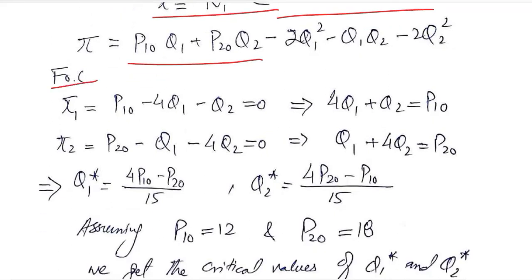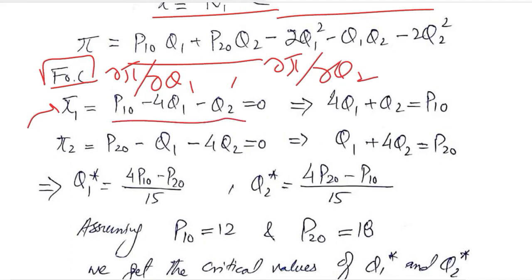After this, once we calculate the first order conditions π₁, the derivative of π with respect to Q₁, and then the derivative of π with respect to Q₂, we will get these expressions which can be further written like this and this expression which can be further written like this.